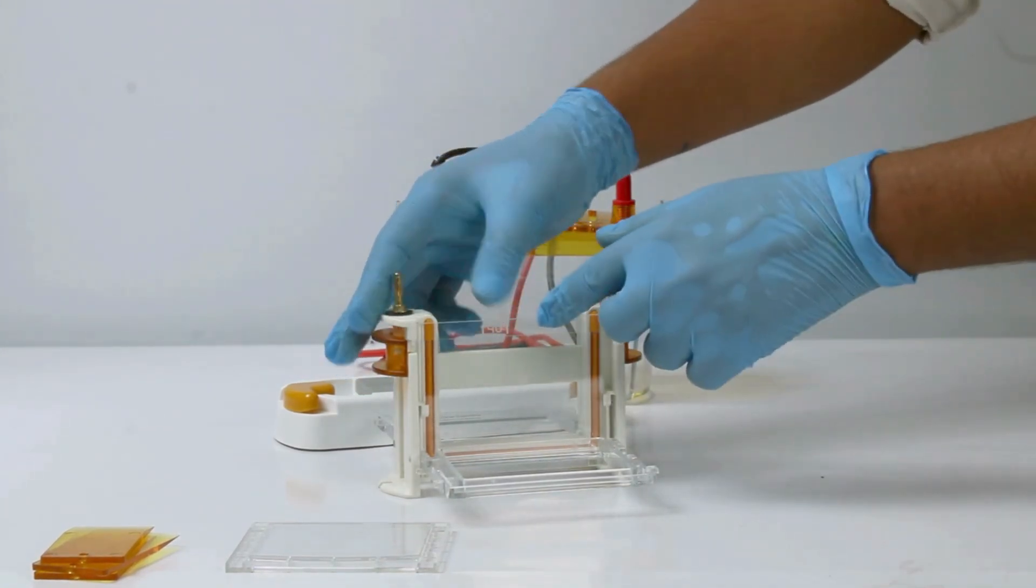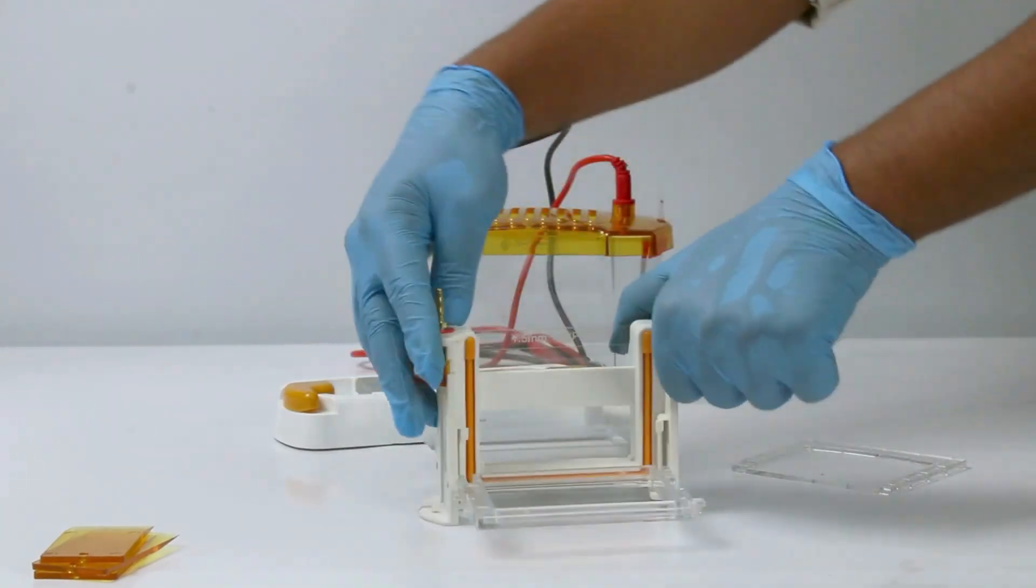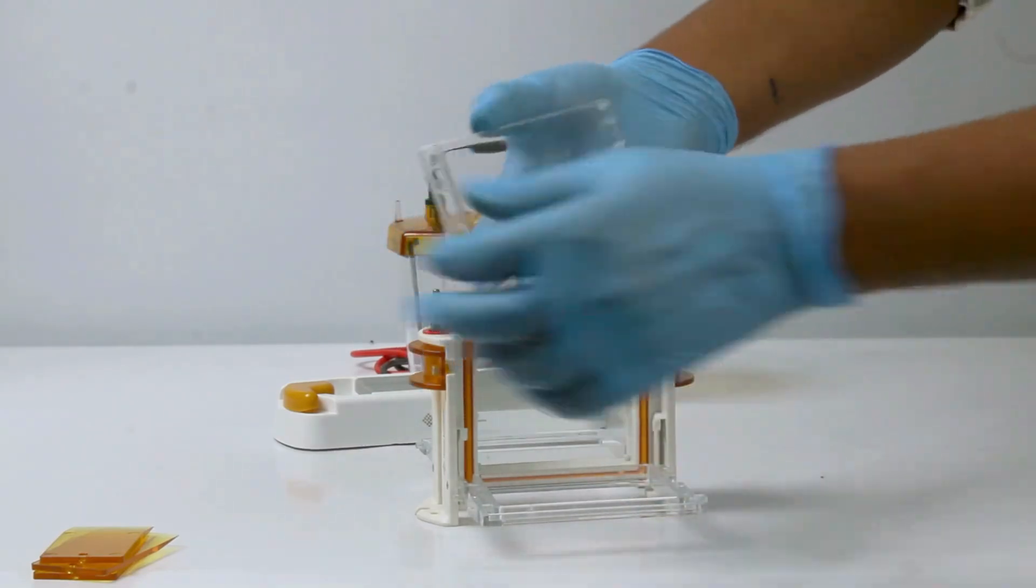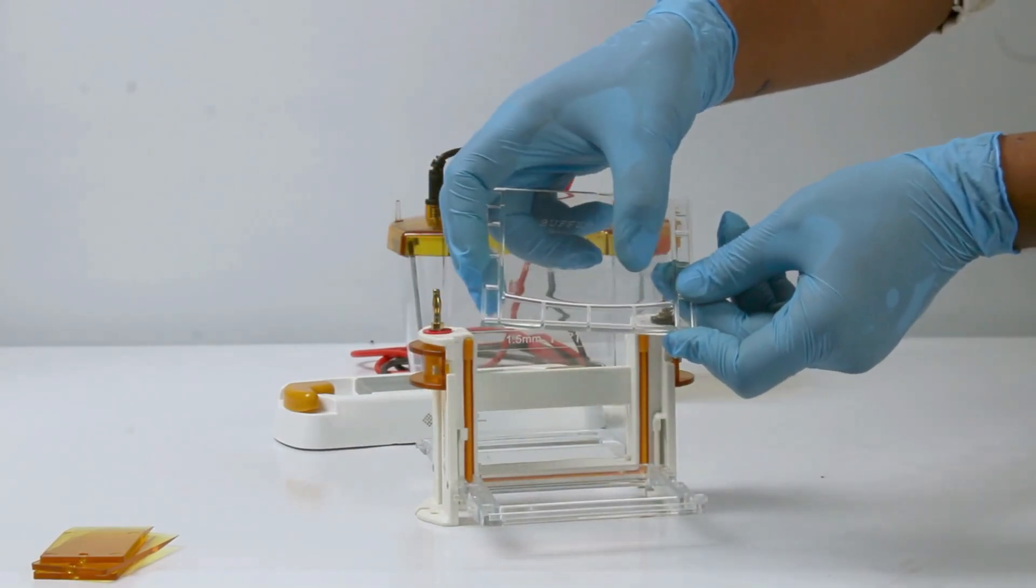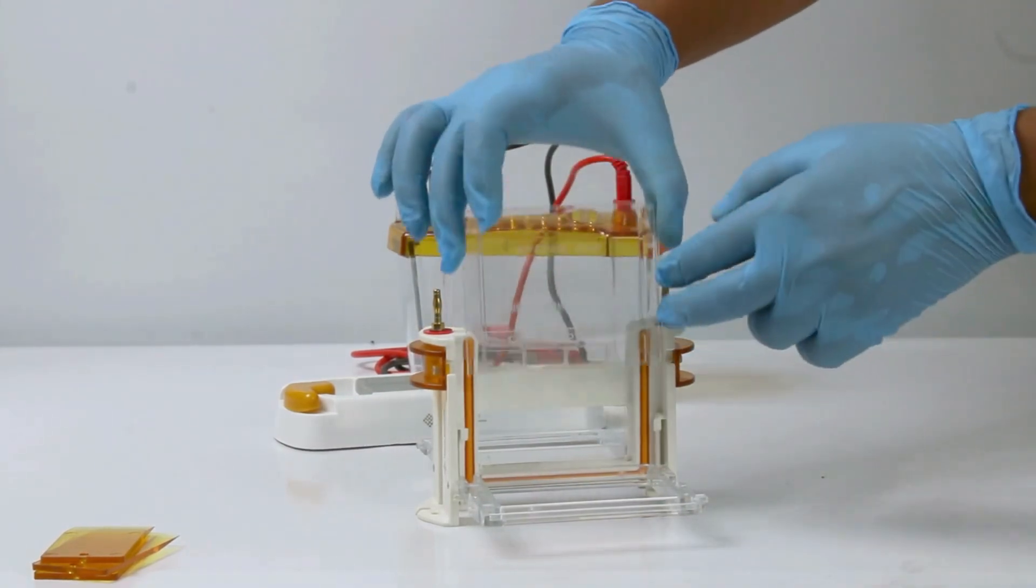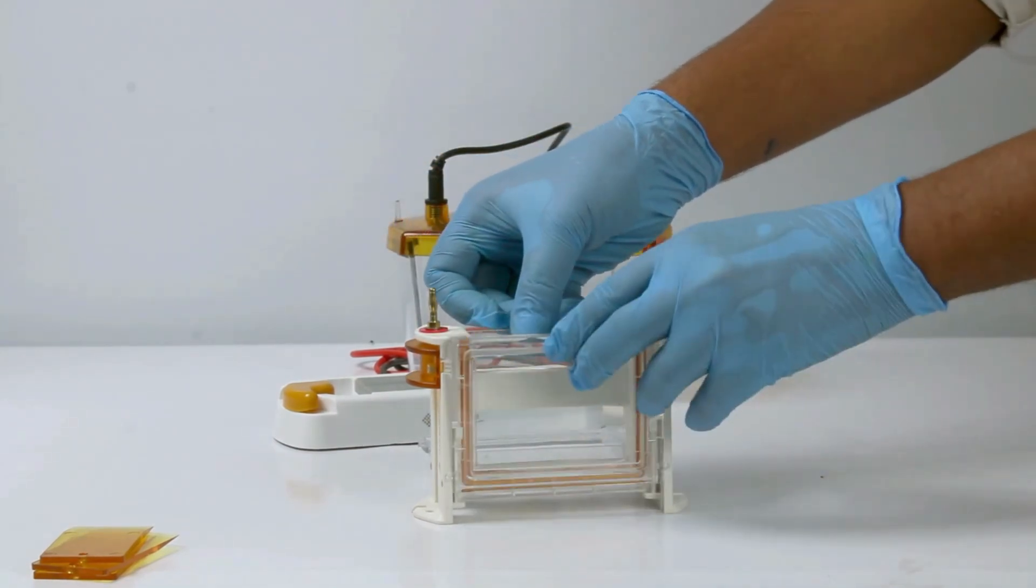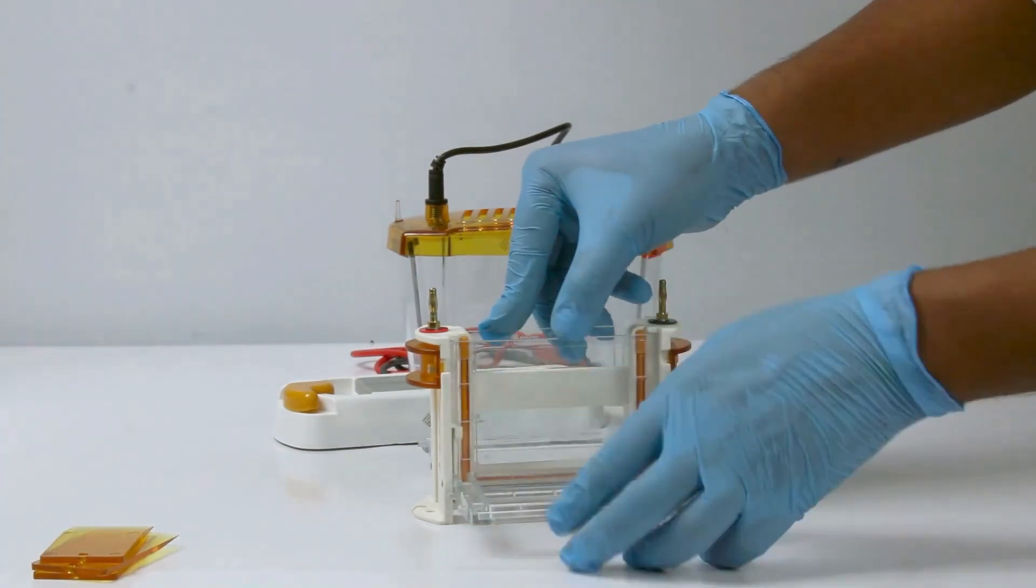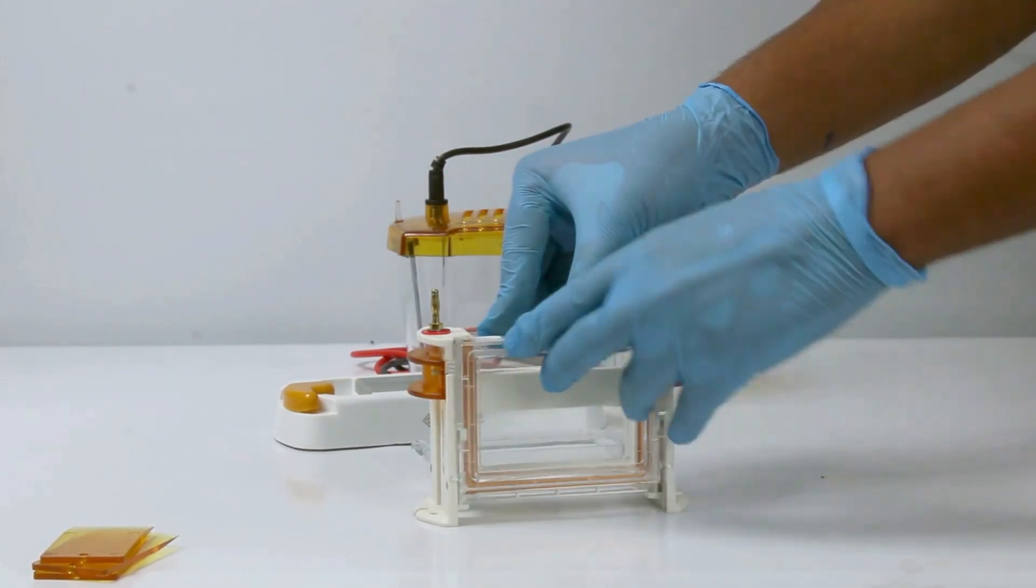If running a single gel, insert the buffer dam on the opposite side of the bracket. If running two gels, place the second one on the other side instead of buffer dam. Then close the casting unit properly.